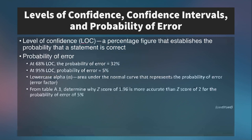The level of confidence, or LOC, is a percentage figure that establishes the probability that a statement is correct. The probability of error is the remainder after we establish the level of confidence — the two together always add up to 100. So at a 68% level of confidence, there is a 32% probability of error. At a 95% level of confidence, we have a 5% probability of error. We use lowercase alpha to represent the area under the normal curve that represents the probability of error.